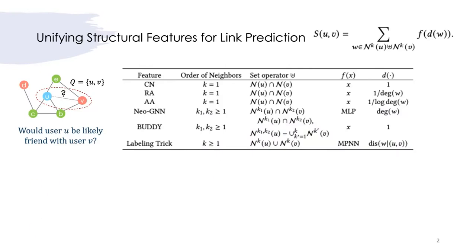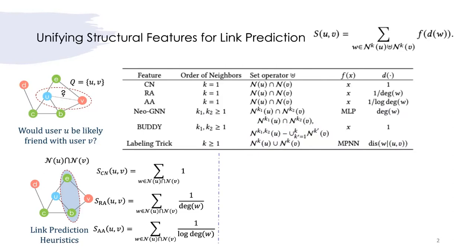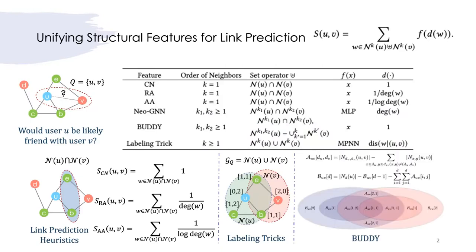Therefore, existing methods resort to using handcrafted heuristics, such as common neighbors, or using labeling tricks to enhance GNN, or using intersection and difference-based heuristics, such as BUDDY, to tackle link prediction tasks. However, these methods have issues in expressivity or scalability.